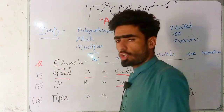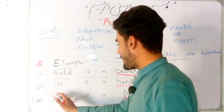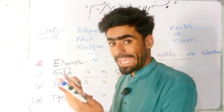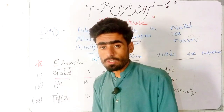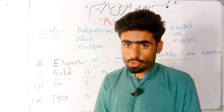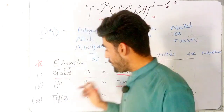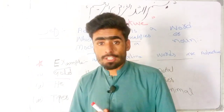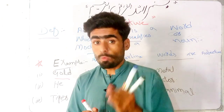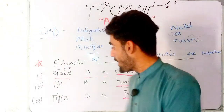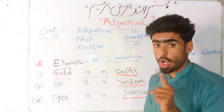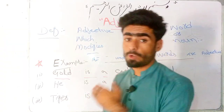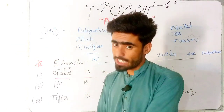He is an actor — it is simple. But we say 'He is a handsome actor.' This is why we have to modify our noun. This underlined word is just trying to modify the noun. We could write 'He is an actor,' but no — we have used the word 'handsome' because we are learning about the adjective word.